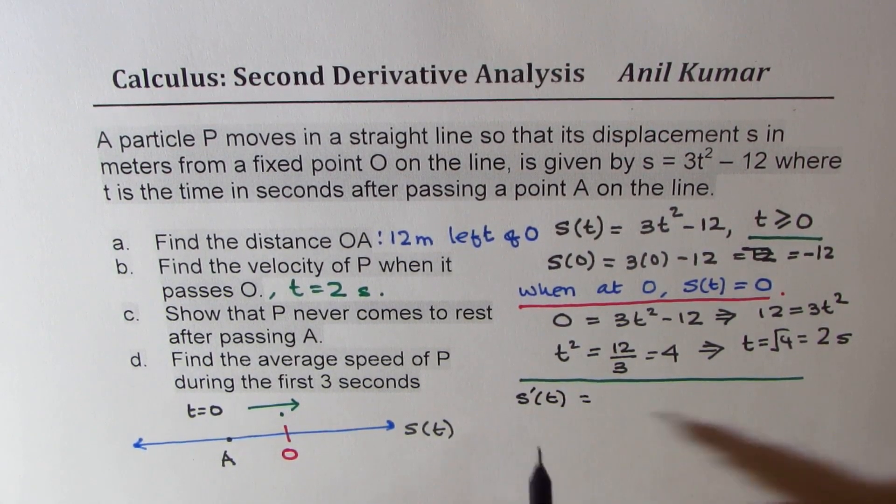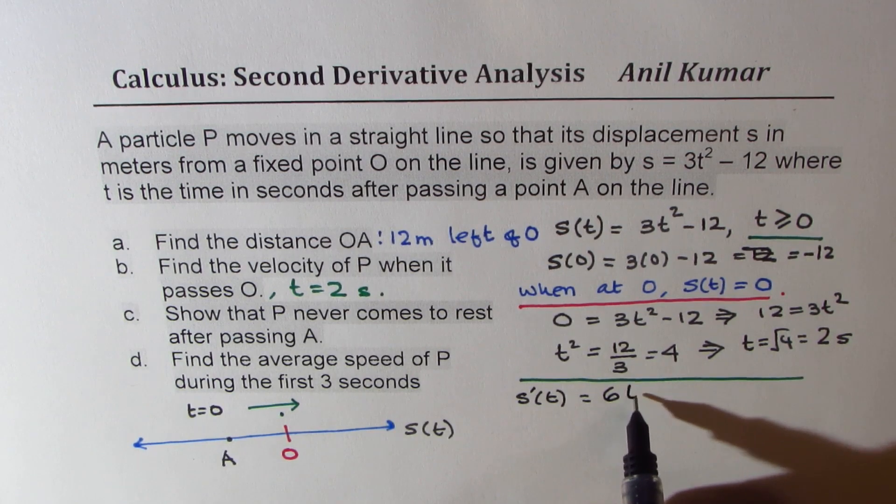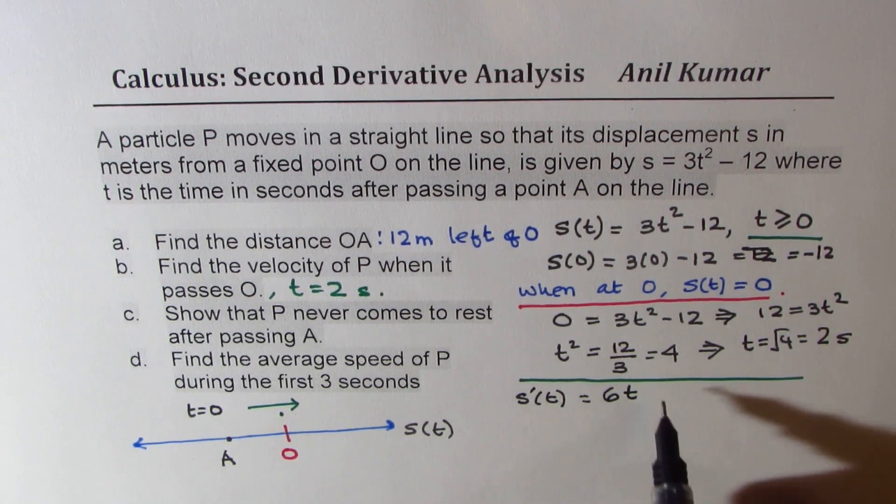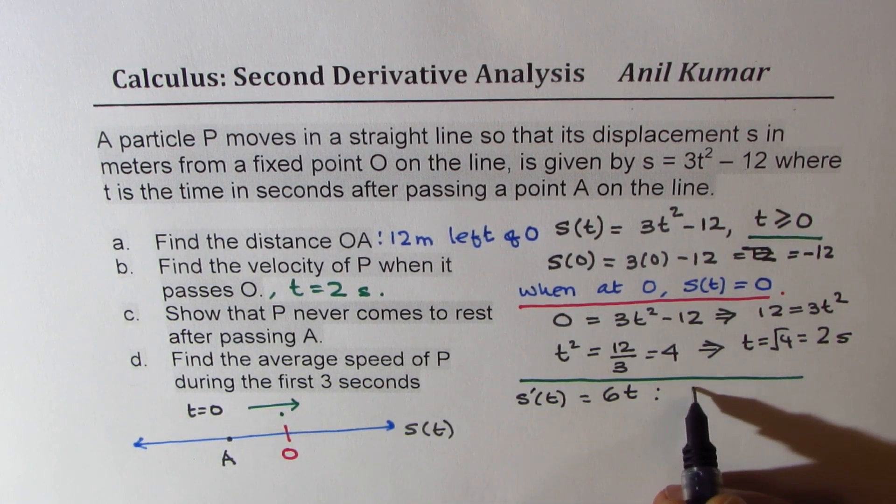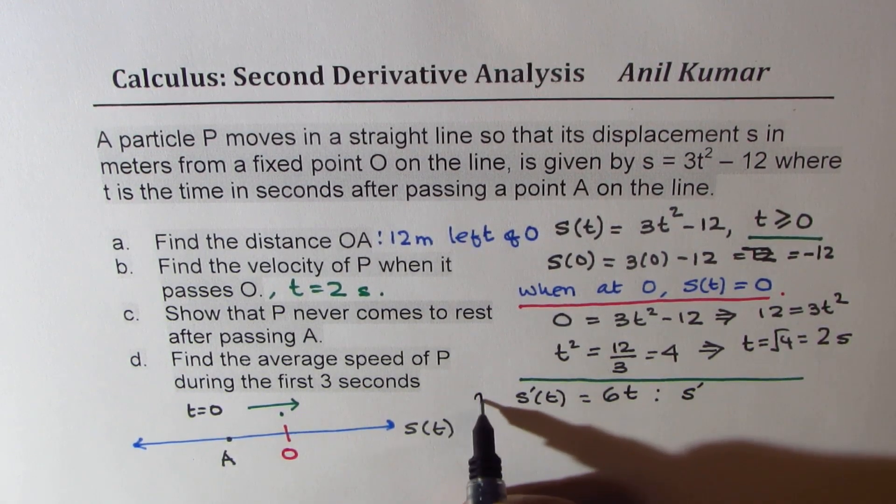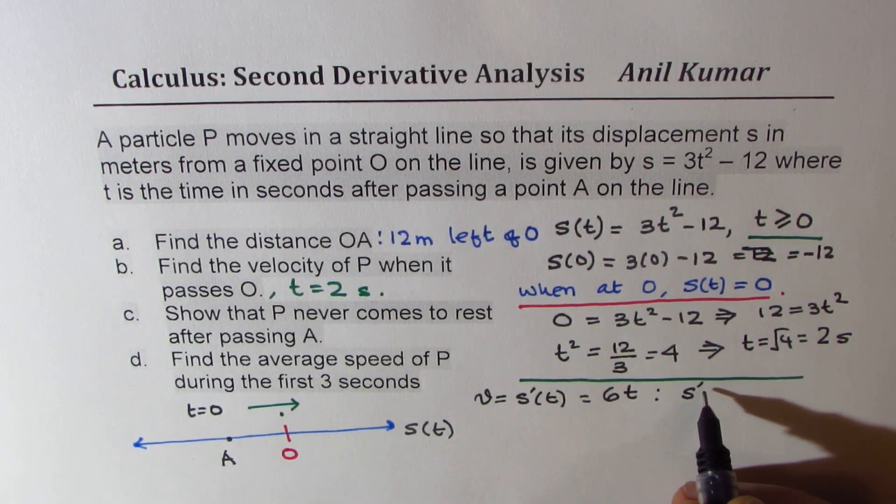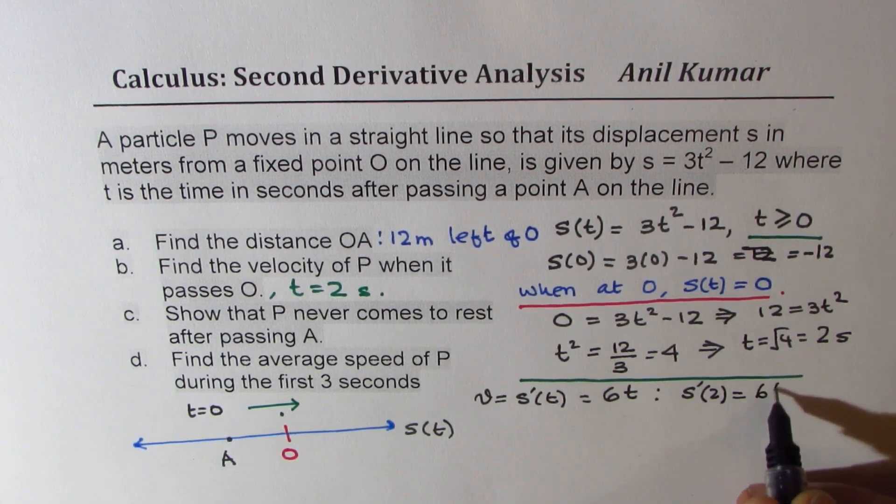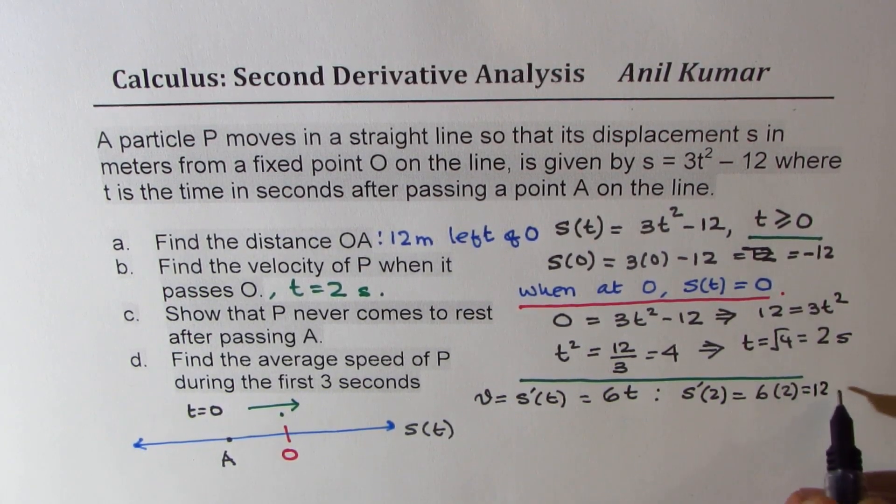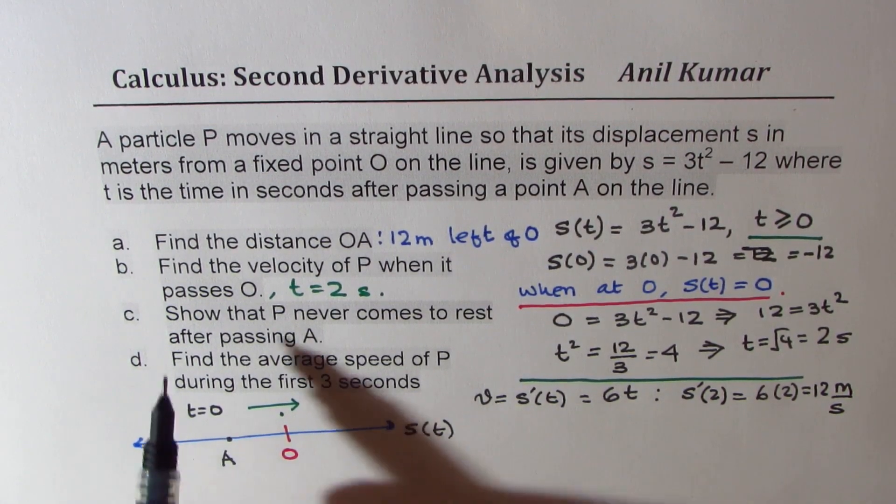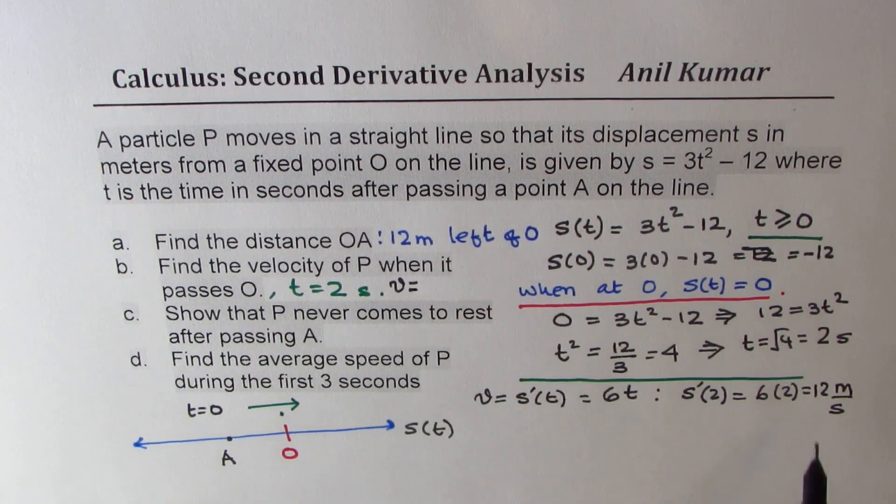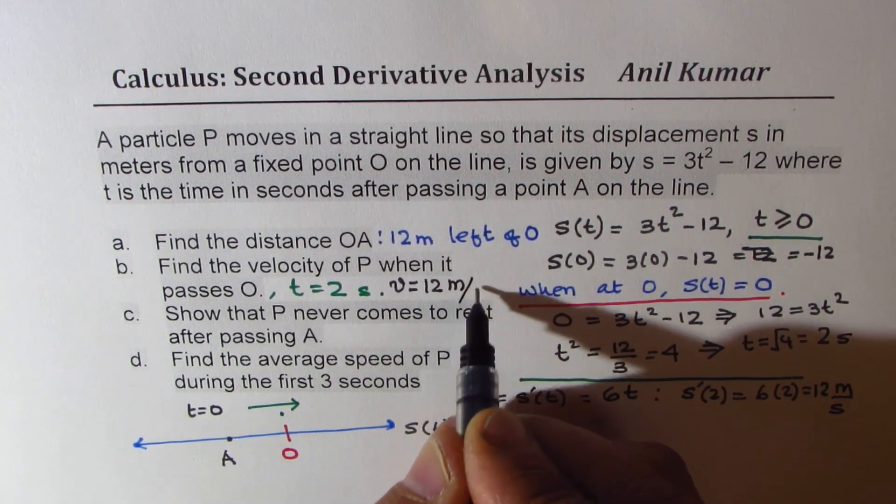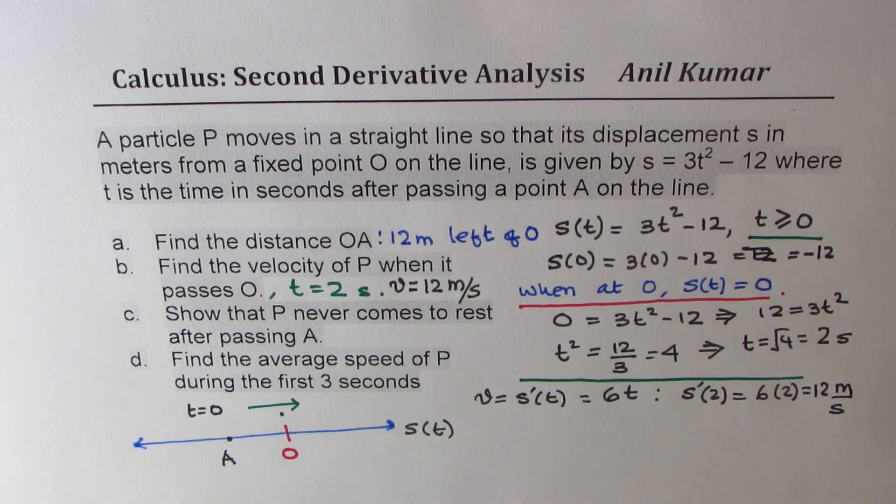So let's find derivative of displacement. So that is S'(T) will give you applying the power rule 6T. So now we only want the velocity at T equals 2. So the velocity, this is velocity, derivative of displacement. So this velocity at T equals 2 will be 6 times 2 or 12 units being meter per second. So that is how we get answer for part B, which is velocity equals 12 meters per second. So I hope that is absolutely clear.